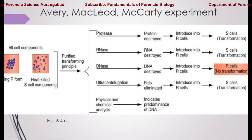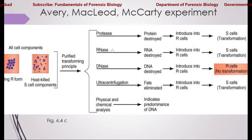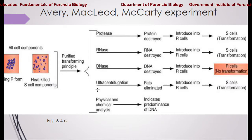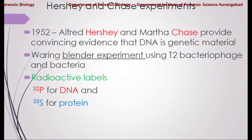They also ultracentrifuged the mixture to remove fat components. When introduced into healthy mice, transformation still took place. In all these cases, treatment with protease, RNase, lipase, or other physical means did not prevent transformation — only DNase did. This indicated that it is none other than DNA that is responsible for transformation. It was convincing evidence that DNA carries genetic information.